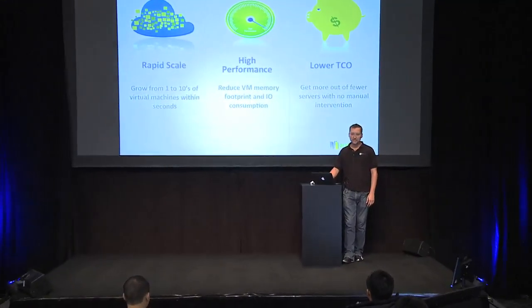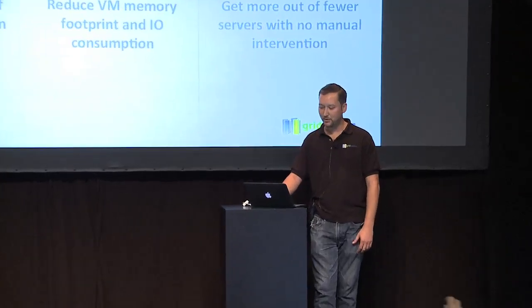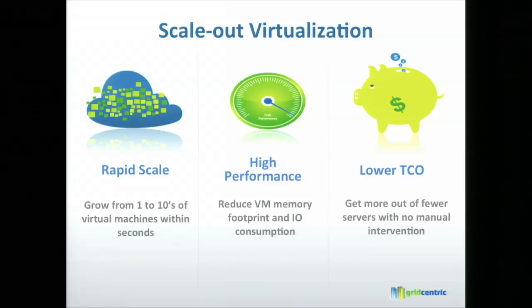Gridcentric makes an OpenStack extension called virtual memory streaming. What it enables is something we call scale-out virtualization, and we focus on three main things: being able to rapidly scale virtual infrastructure, high performance and getting the most out of your physical infrastructure, and increasing efficiency and reducing physical resources — effectively lowering your total cost of ownership of your OpenStack cloud.